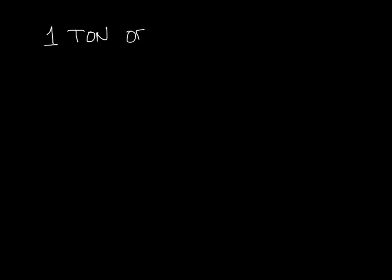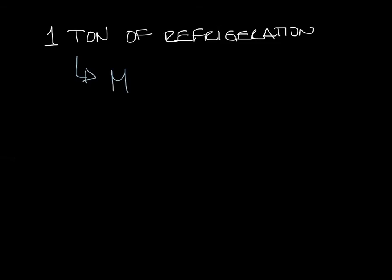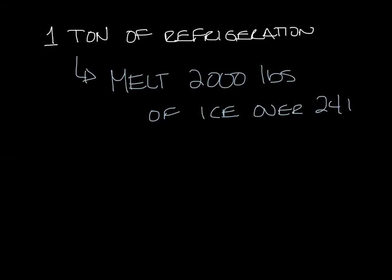Now let's talk about the ton. What is one ton of refrigeration? You hear this used all the time. One pound of water changing temperature by one degree is a pretty small amount of energy when compared to how much you need to cool an office or your home. So you hear about tons of refrigeration, like a five ton air conditioner. A ton of cooling is what would be required to melt 2,000 pounds — or a ton — of ice over a 24 hour period.